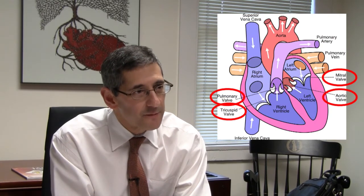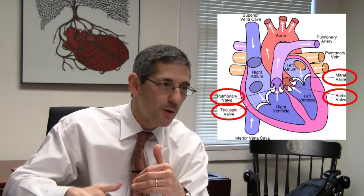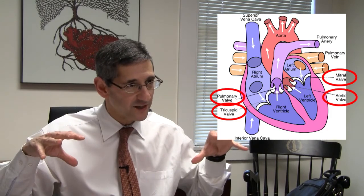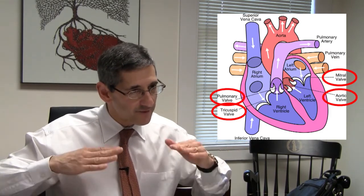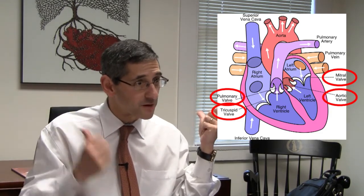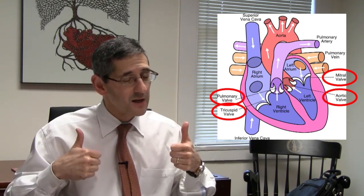Another use of the Bernoulli principle is to determine how closed up a valve is — valve stenosis. We have four major valves in the heart, and their function is to keep blood moving in one direction. As the heart squeezes, blood should pass through a valve but not go backwards into the previous chamber. For example, the mitral and tricuspid valves connect the atria to the ventricles and must close during contraction so blood goes out to the pulmonary arteries and aorta, not backwards.